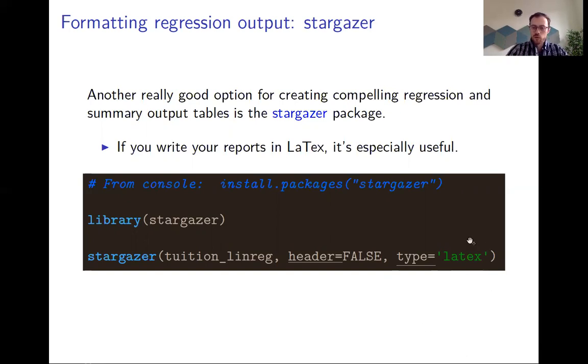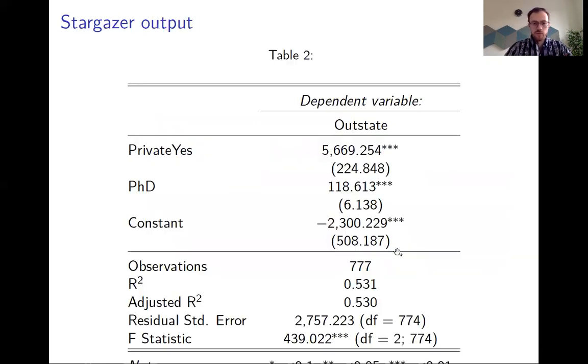If you're used to, for example, outreg in Stata, stargazer is basically the closest you will get to outreg from Stata. If you just take the same example that we have before and use stargazer, we will get this table here. You can see that it already contains the coefficients with the standard error right beneath it, and contains a lot of different summary statistics.